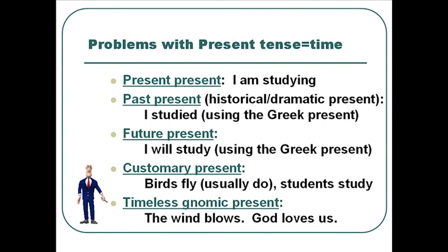Then there's a timeless or gnomic present: 'The wind blows — that's what the wind does.' So we have at least five ways that the present tense form actually flushes itself out: into present time, into past time, into future time, and sometimes into a generic customary present or a timeless gnomic present. Therefore, we've got to loosen up your connection between the present tense forms as equal to present time. That's not true, and we've got to look at things in a much more nuanced way.